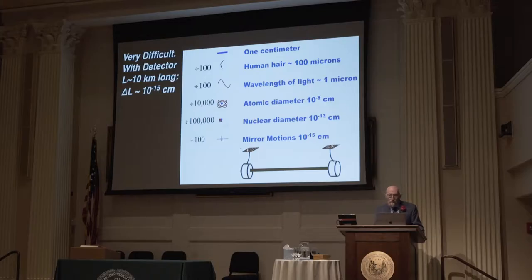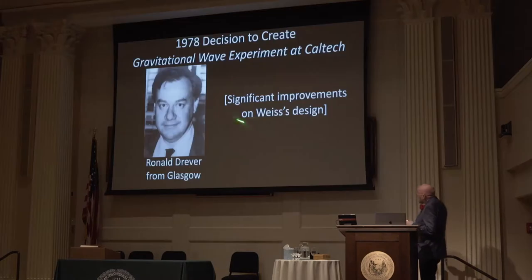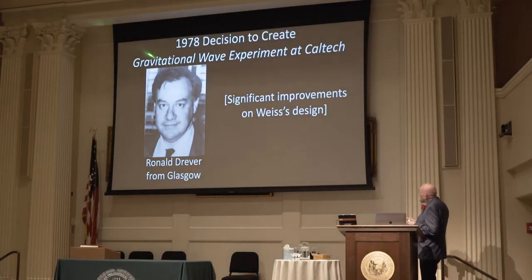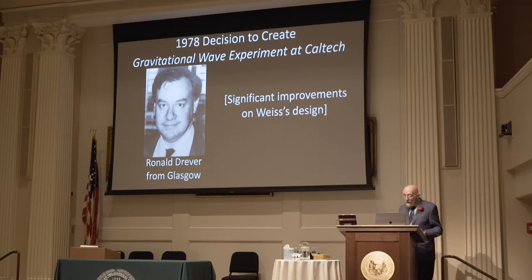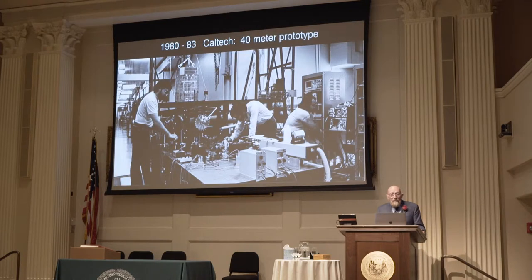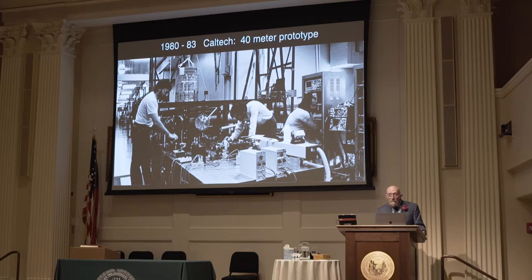It took about four years for Ray Weiss and other colleagues, particularly Vladimir Bruginsky in Moscow, to convince me that this just might succeed. Once I was convinced, I decided that as a theorist I should make every effort to help them succeed. So in 1978 we decided to build a gravitational wave experimental group at Caltech to work in parallel with Ray Weiss's group. We brought Ronald Drever from Glasgow to lead that effort because he'd made some very clever and significant improvements on Ray Weiss's designs. A 40-meter prototype — one one-hundredth the scale of the ultimate LIGO detectors — was built and began to operate.